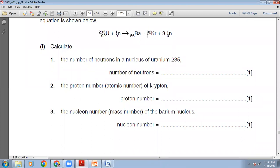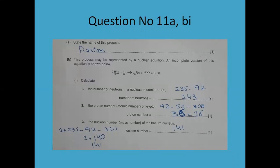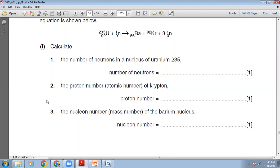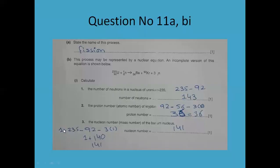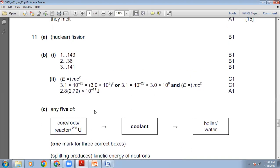The next question is the proton number of krypton. Using conservation of proton number: 92 + 0 = 56 + unknown + 0, so the proton number of krypton = 92 − 56 = 36. For the nucleon number of barium: 1 + 235 − 92 − 3 = 141. So the answers are 143 neutrons, proton number 36 for krypton, and nucleon number 141 for barium — all correct.